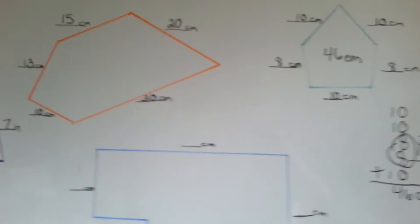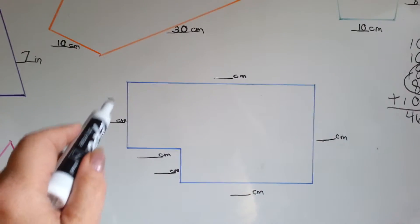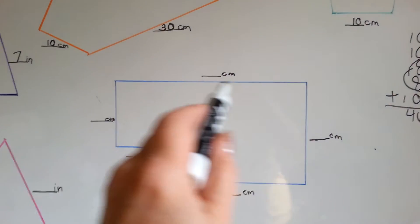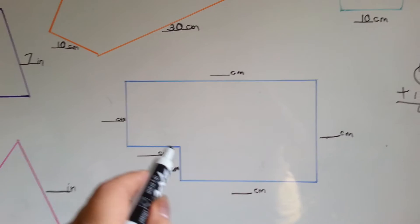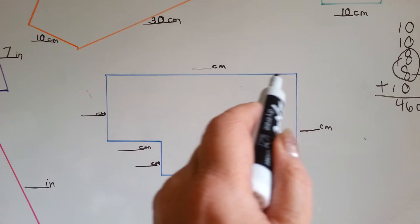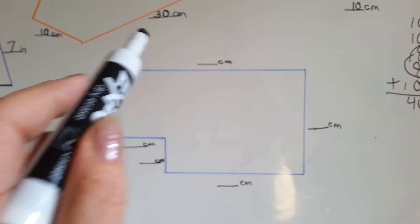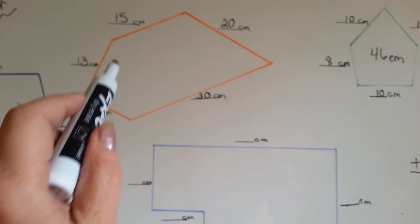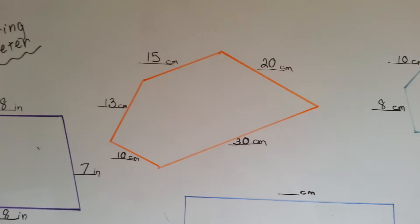So all you have to do is measure whether you're doing centimeters or inches. You measure starting with the edge of the ruler to where the line ends. You write in all those numbers, and you add them up to get the perimeter.